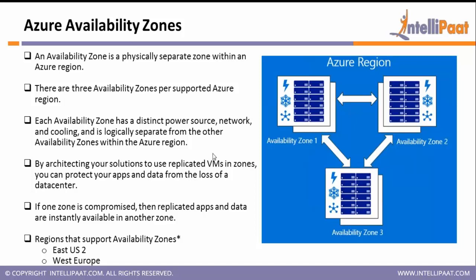Another concept is Azure Availability Zones. This is a concept that already existed in AWS — AWS already had availability zones — but this concept was not part of Azure earlier and was recently launched. As of now, Azure Availability Zones are only offered in two regions: East US 2 and West Europe — not in all regions. Out of 36-plus regions, they are only offering it in two regions.